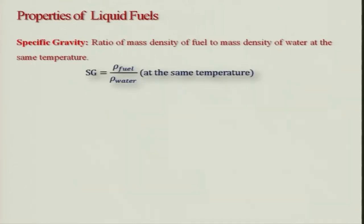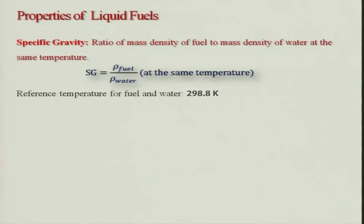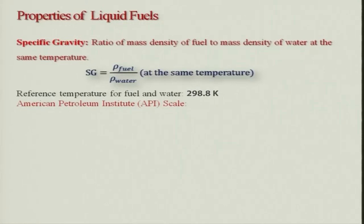People use the standard temperature and Sg is basically rho fuel divided by rho water. The reference temperature is taken as 288.8 Kelvin for both fuel and water. The American Petroleum Institute has developed a scale known as the API scale.